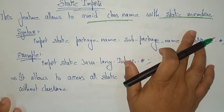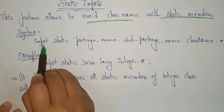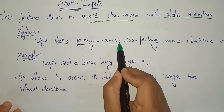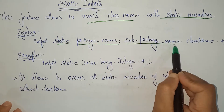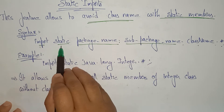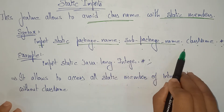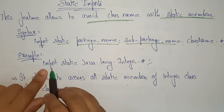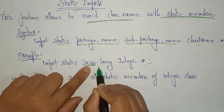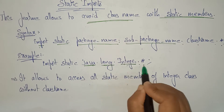The syntax is: import static, then write the package name, dot, sub-package name, dot, class name, dot star. For example: import static java.lang.Integer.*